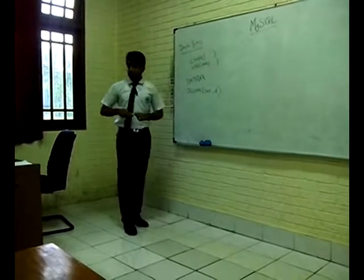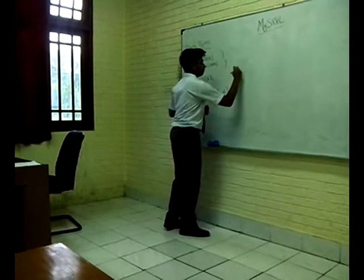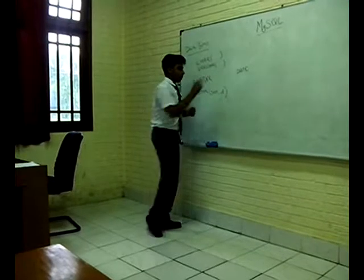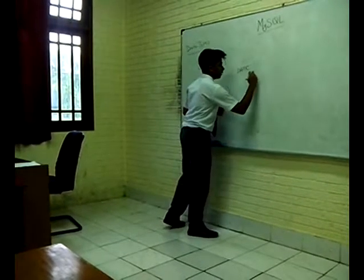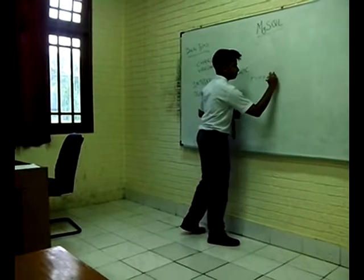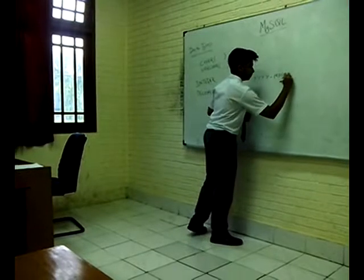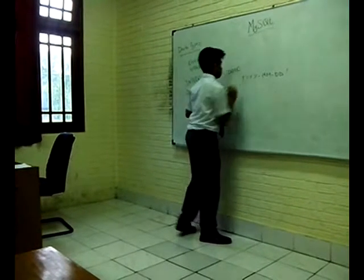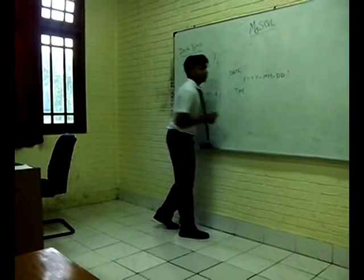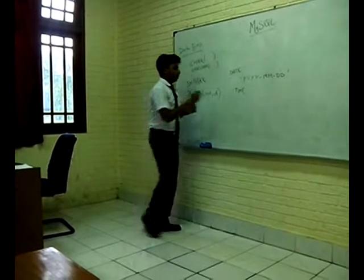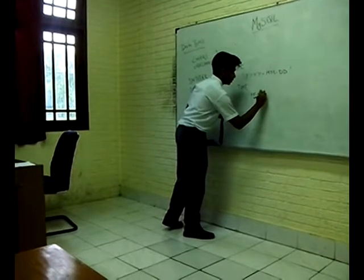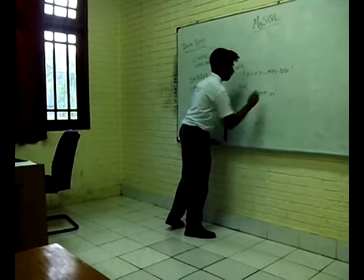Next is the date data type, which stores data in a date format. In the date data type, the date is written as the year first, then the month, and then the date. It is given between single quotes. This is the time data type. It is used to input the time, entered as hours, minutes, and seconds, between single quotes.